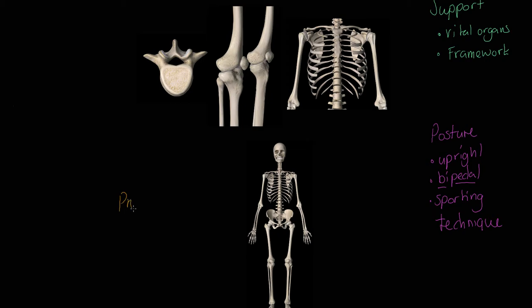Thirdly, the skeleton is involved in protection — it protects soft tissues. For example, the ribs protect the soft tissue within the thoracic cavity, combined with the sternum. The vertebrae protect the spinal cord, and the cranium protects the brain. In relation to sporting performance this is really important because there are often impacts, falls, and collisions, so the skeletal system doing this job is critical.